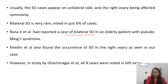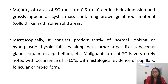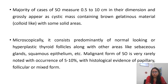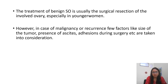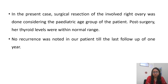Khedri et al. also found struma ovarii in the right ovary, while Gati Magadi noted all 4 cases in the left ovary. Grossly, the size range is 0.5–10 cm, appearing as a cystic mass with brown gelatinous material and some solid areas. Microscopically, it consists predominantly of normal-looking thyroid follicles, with other areas showing sebaceous glands and squamous epithelium. Malignant struma ovarii is very rare, noted in 5–10% of cases, with papillary and follicular types. Treatment is surgical excision, particularly ovarian mass resection in younger women. In cases of malignancy or recurrence, additional factors such as ascites and surgical adhesions are considered. In the present case, surgical excision of the involved right ovary was performed considering the pediatric age of the patient, and post-surgery levels were within normal range.